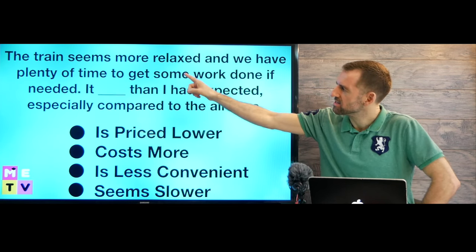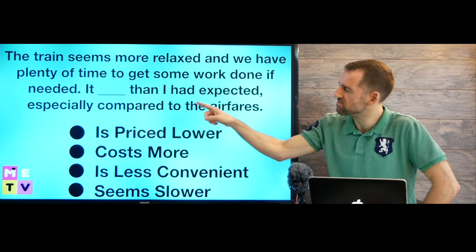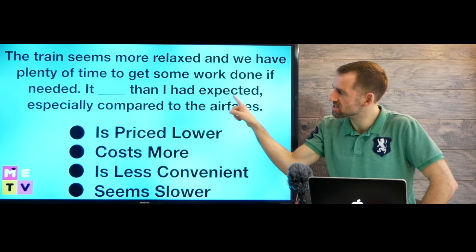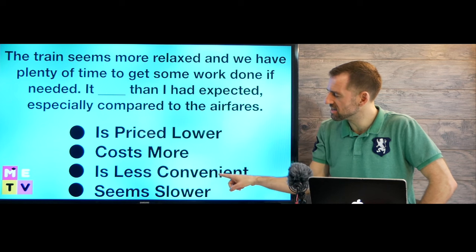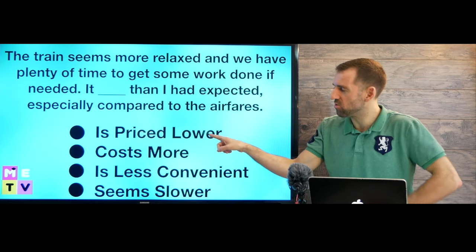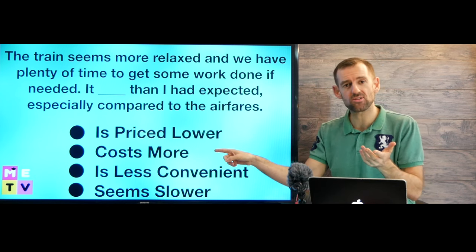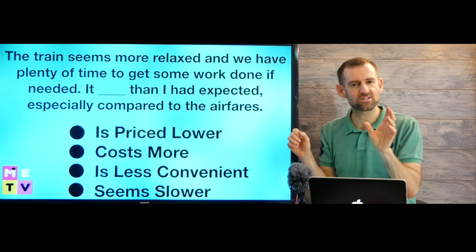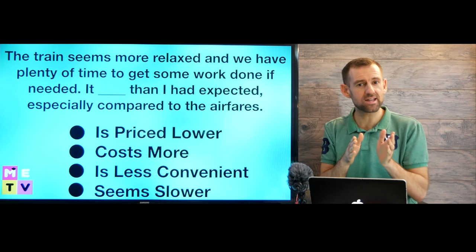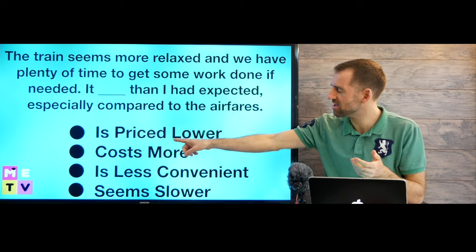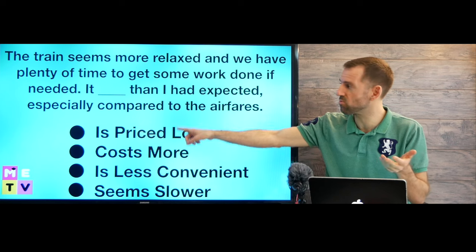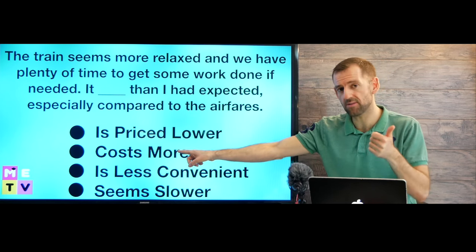Then we go to the next one. The train seems more relaxed and we have plenty of time to get some work done if needed. It blank than I had expected, especially compared to the airfares. It is priced lower than I had expected, it costs more than I had expected, it is less convenient than I had expected, or it seems slower than I had expected. We can go and look at the diagram. Is it priced lower or is it higher? Well, remember the train costs $260 and the plane costs $240. So the plane is actually cheaper. It can't be priced lower because the plane is actually priced lower. We're talking about the train. It costs more. Yeah, that's true.